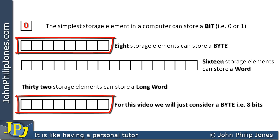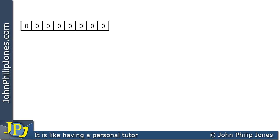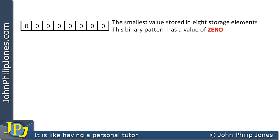Let's consider eight storage elements. And into each element, let's store a zero. Here we can see I've got eight individual storage elements strung together, and within each we have a zero. Now, if we're going to talk about the numeric value of this, then the numeric value of this is obviously a zero. So the smallest value that can be stored in eight storage elements is shown here, and this particular binary pattern has the value of zero.